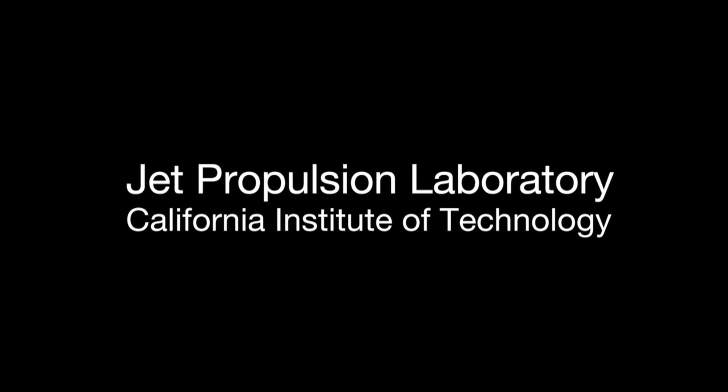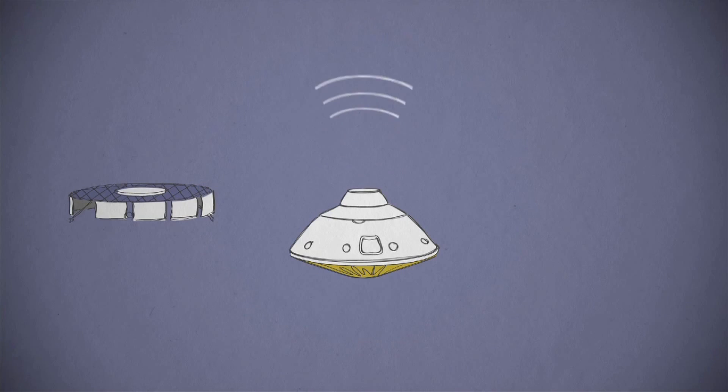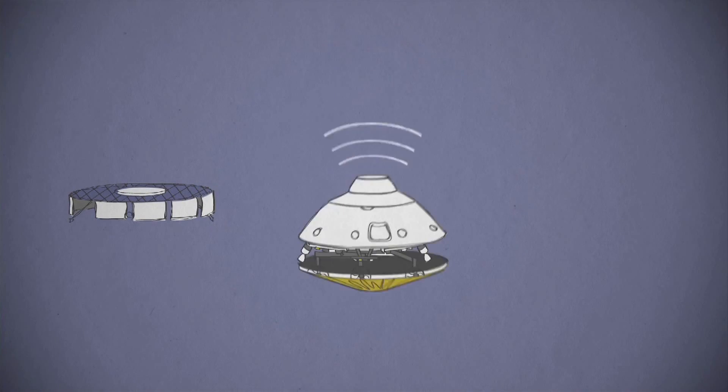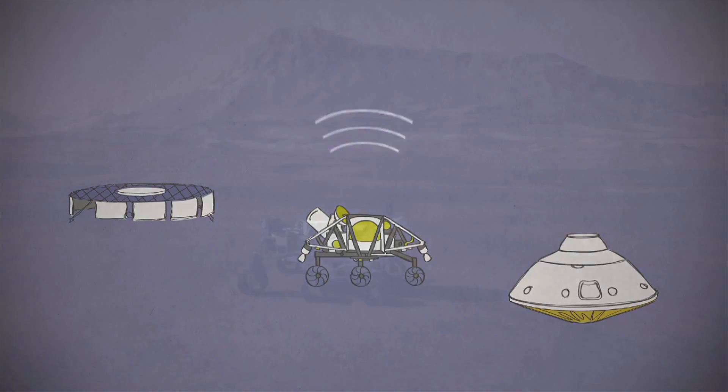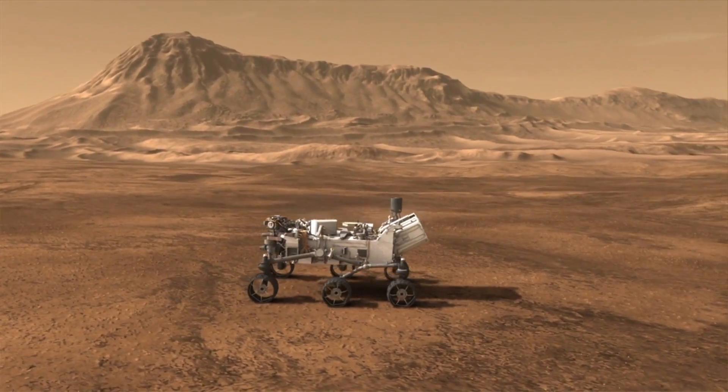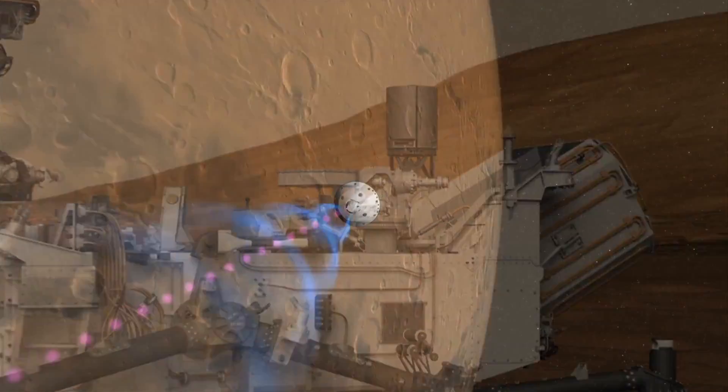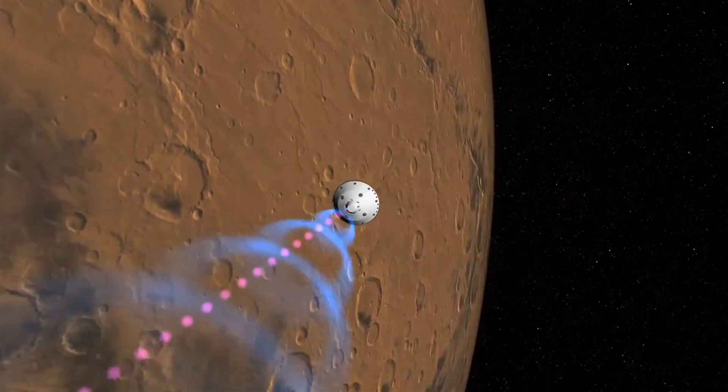We at Coverity have partnered with NASA's Jet Propulsion Laboratory. The NASA Jet Propulsion Laboratory, or JPL, is the builder of the Curiosity rover. Coverity helps them ensure the reliability of the flight software guiding the landing of Curiosity on Mars.